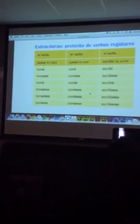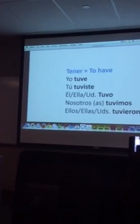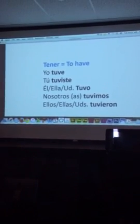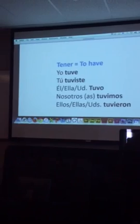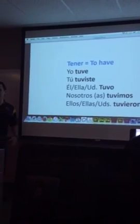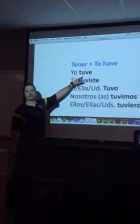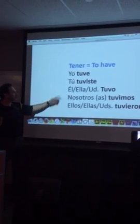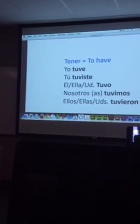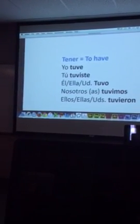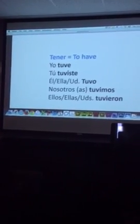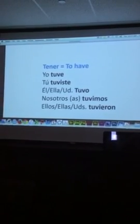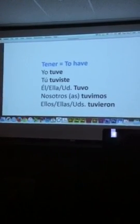However, we have some irregular verbs like the ones on page 196, página 196. Por ejemplo, tener is one of them. ¿Qué quiere decir tener? To have. So if I want to say I had five dollars yesterday: yo tuve. You had: tú tuviste. She had: ella tuvo. We had: nosotros tuvimos. They had: ellos tuvieron.